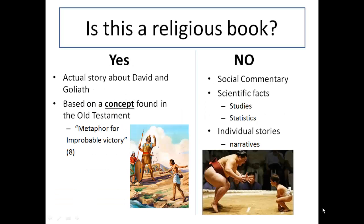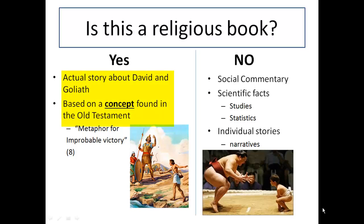The first question people have when looking at the title is: is this book a religious book? The answer is both yes and no. Yes, it is actually about the story of David and Goliath. It is based on a concept found in the Old Testament, articulated on page 8, where it says this book is a metaphor for improbable victory. In another sense, it is not a religious book — it is a social commentary. It presents scientific facts; you'll see many studies and statistics, and it includes individual stories and narratives.